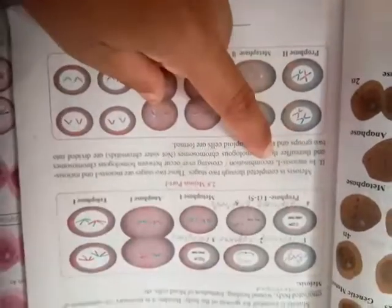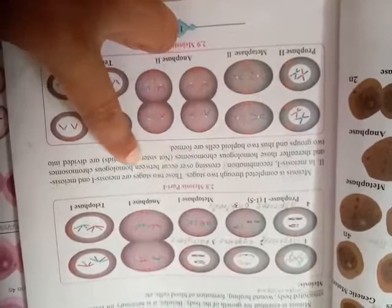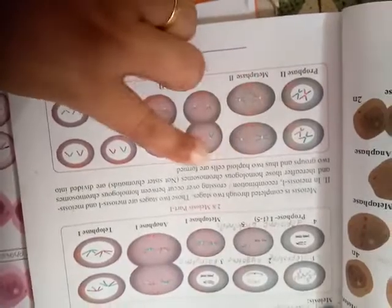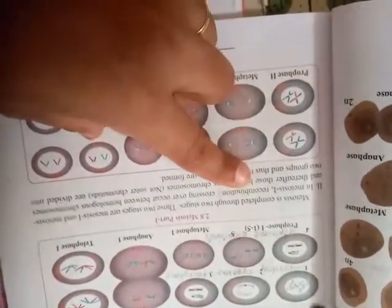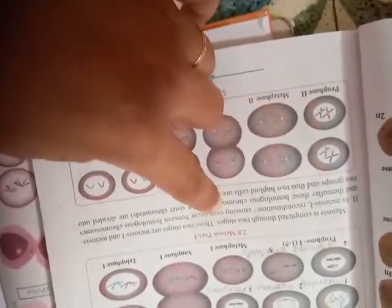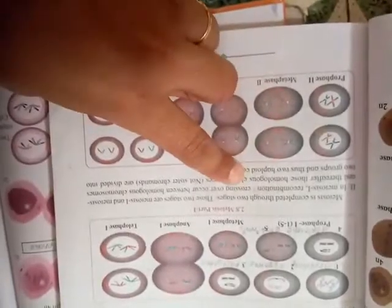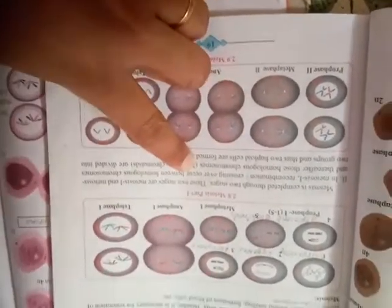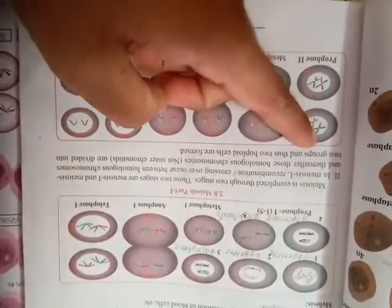Again in meiosis 1, recombination or crossing over occurs between homologous chromosomes and thereafter those homologous chromosomes are divided into two groups and thus two haploid cells are formed. What happens here is genetic recombination takes place. The parent chromosome gets divided into multiple fractions due to the process known as crossing over, and due to this the new daughter cells which are formed are not similar to the parent cell. In mitosis such crossing over was not there.